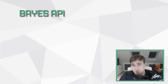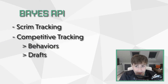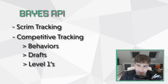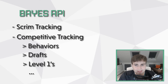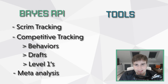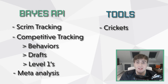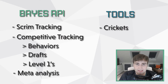The Bayes API is useful for scrim tracking, competitive tracking, behaviors, drafts, and level one patterns — basically anything you as an analyst can think of to scout enemy teams or make sure your team is doing what they should in games. As for tools for the Bayes API, it's essentially crickets. No one's really willing to share the tools they've made, mostly because rather than providing for the community you're essentially giving an edge to your competitors. I wouldn't expect to see many tools for the Bayes API coming out anytime soon.